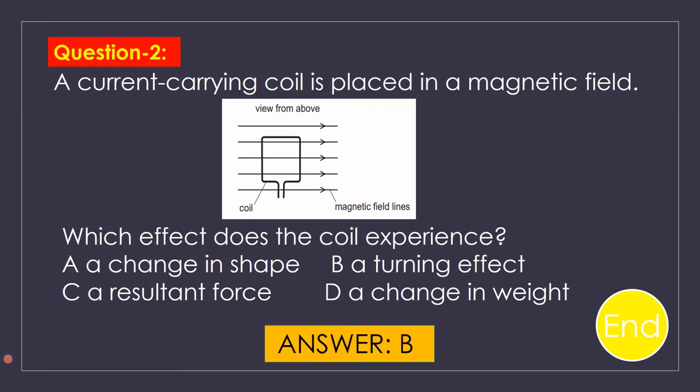Option B. A current carrying coil placed in a magnetic field experiences a force which causes a turning effect on the coil. So B, a turning effect is the right answer.